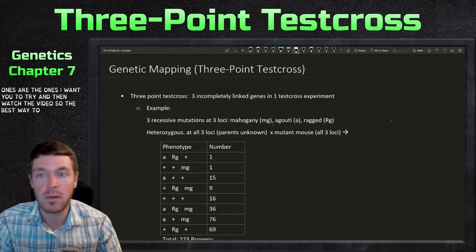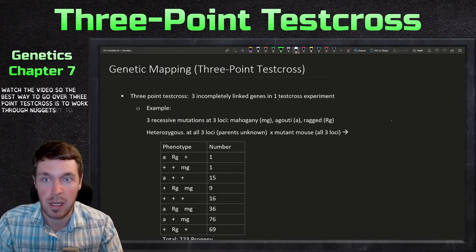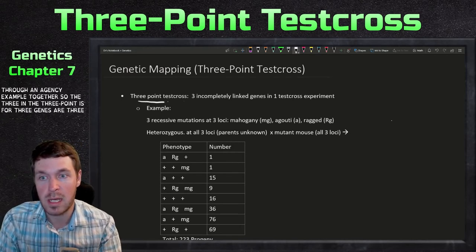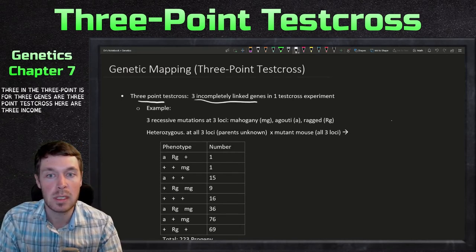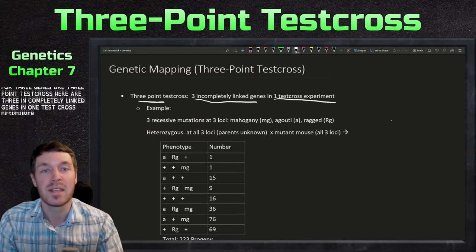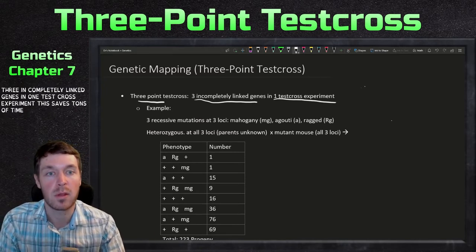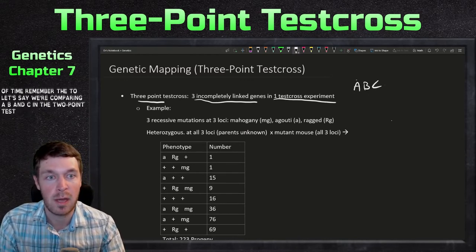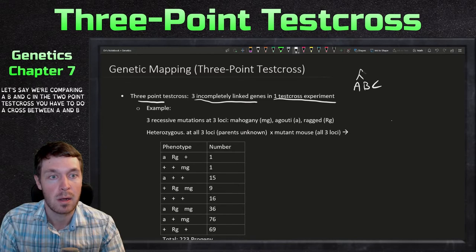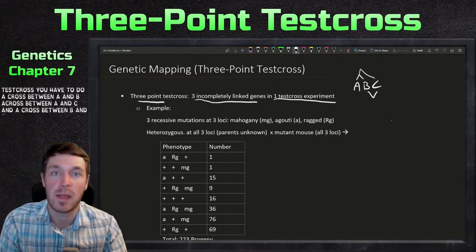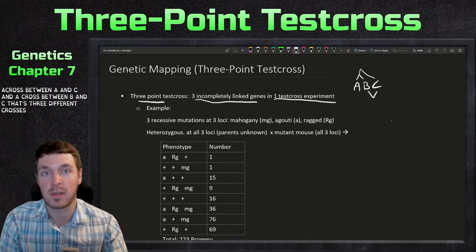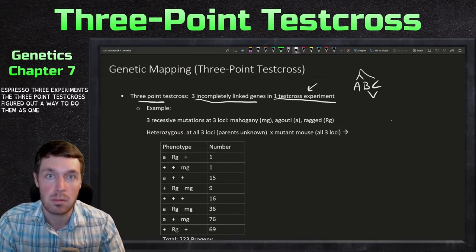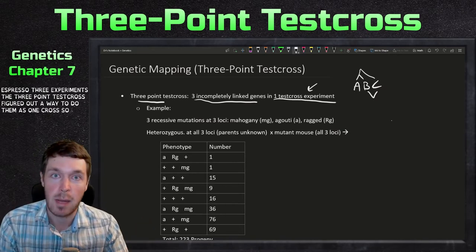The best way to go over three-point test crosses is to work through an example together. The three-point refers to three genes. Here are three incompletely linked genes in one test cross experiment — this saves tons of time. In a two-point test cross comparing A, B, and C, you'd need three different crosses: A and B, A and C, and B and C. The three-point test cross does them all as one cross.